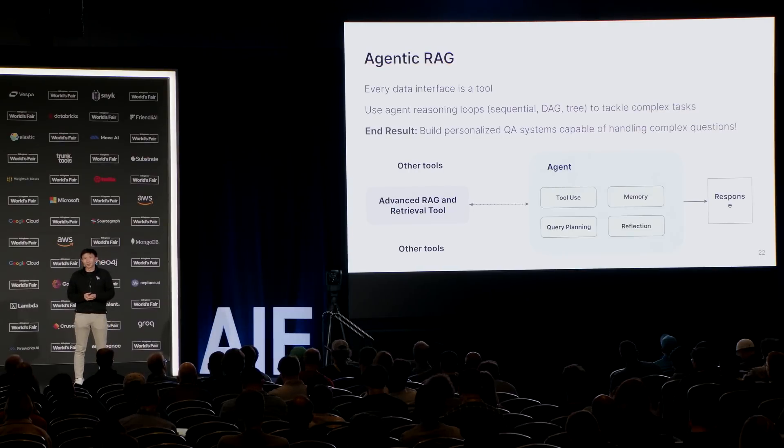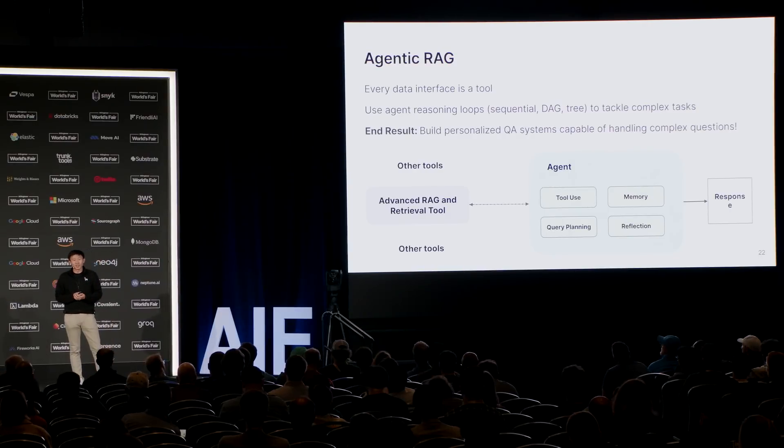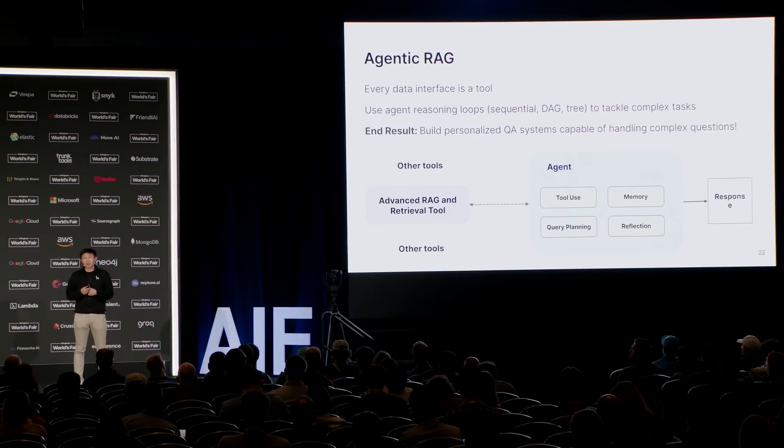We've also talked about agent reasoning loops — probably the most stable one we've seen so far is some sort of while loop over function calling or ReAct. But we've also seen fancier agent papers dealing with DAG-based planning, planning out an entire DAG of decisions, or tree-based planning where you plan out an entire set of possible outcomes and try to optimize. The end result is you're able to build personalized QA systems capable of handling more complex questions — for instance, comparison questions across multiple documents, maintaining user state over time, and looking up information from not only unstructured data but also structured data by treating everything as a data service or tool.